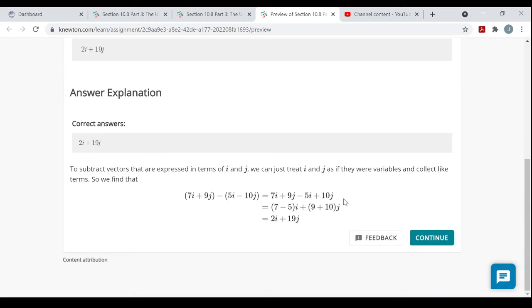And they do it with combining like terms and stuff. You know, 7i minus 5i is 2i, 9j minus negative 10j would be 19j. So you could easily do that as well, kind of treat them like expressions with variables, even though i and j are not variables—they're vectors.